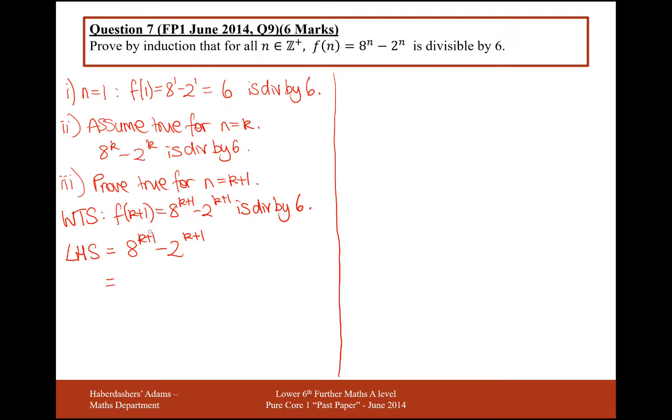And here, what I'm going to do now is I'm going to split up these indices so that the indices look more like our assumption, which I'm going to have to use to help prove this. So, 8 to the 1 times 8 to the k. Remember that when you split up indices, you're multiplying your indices together here.